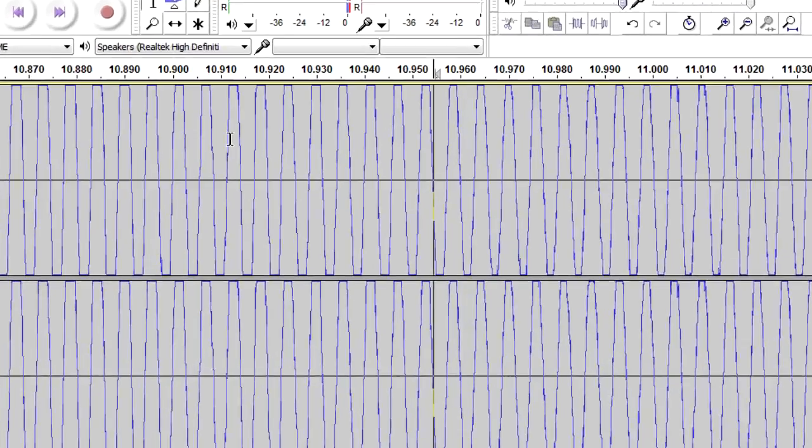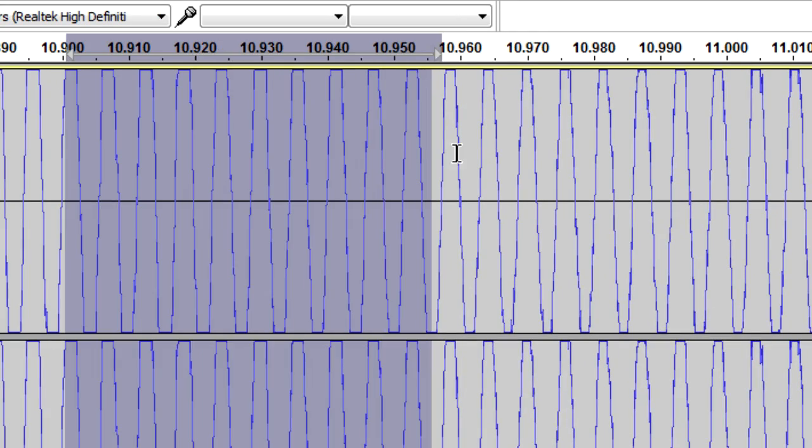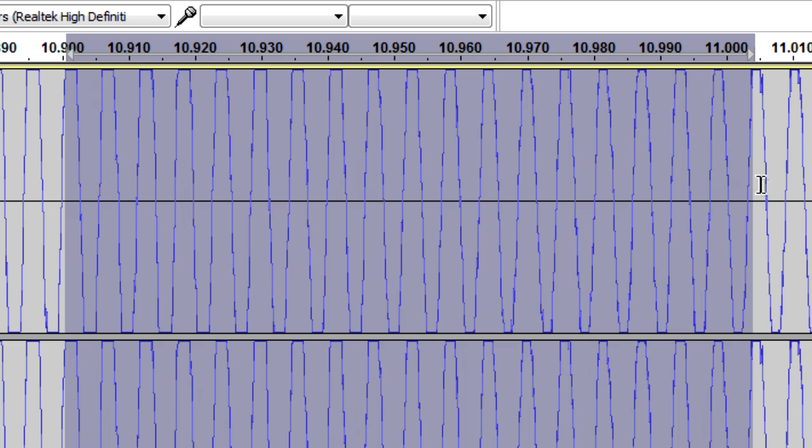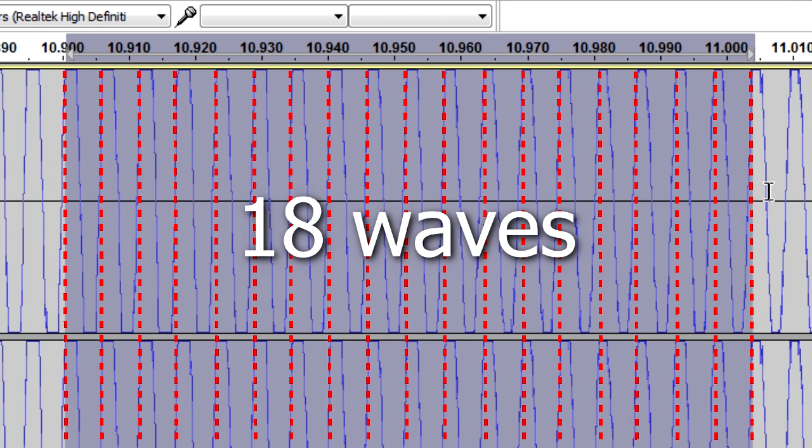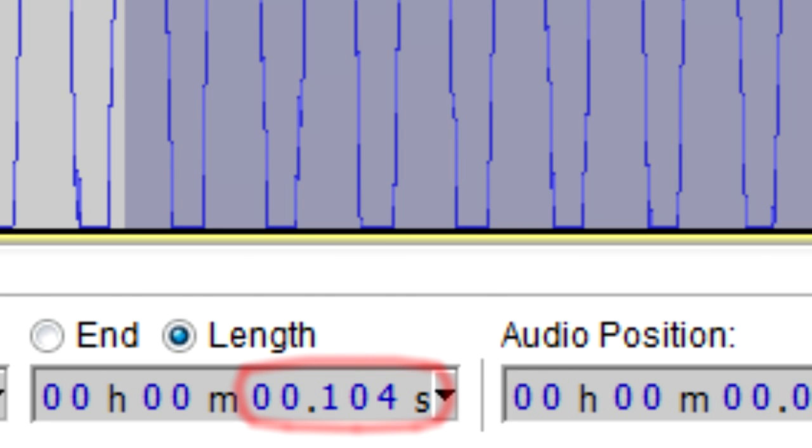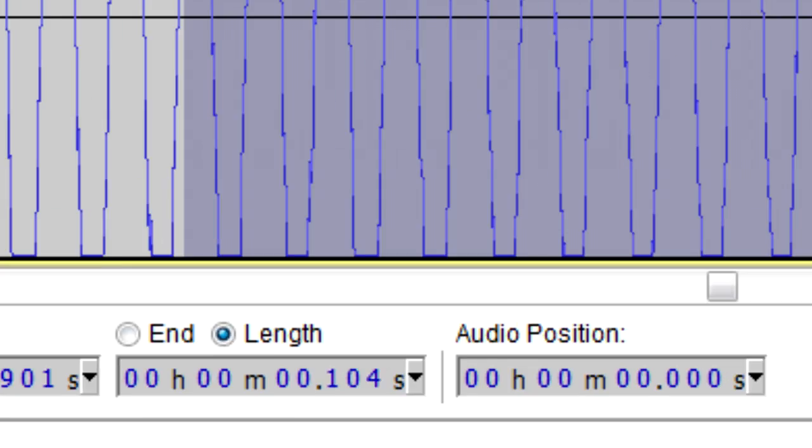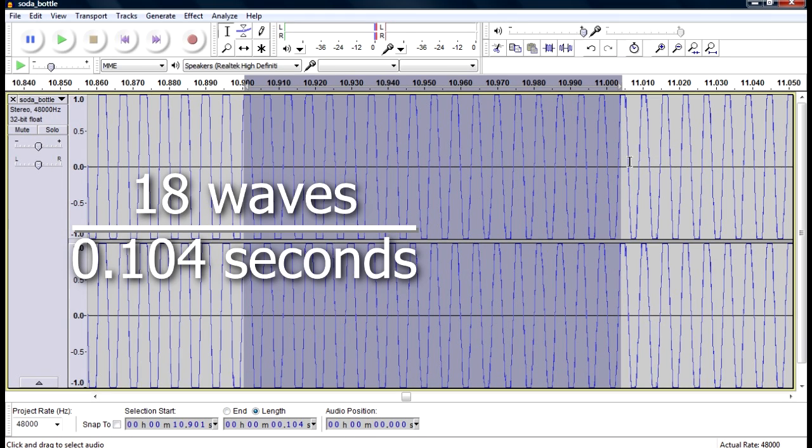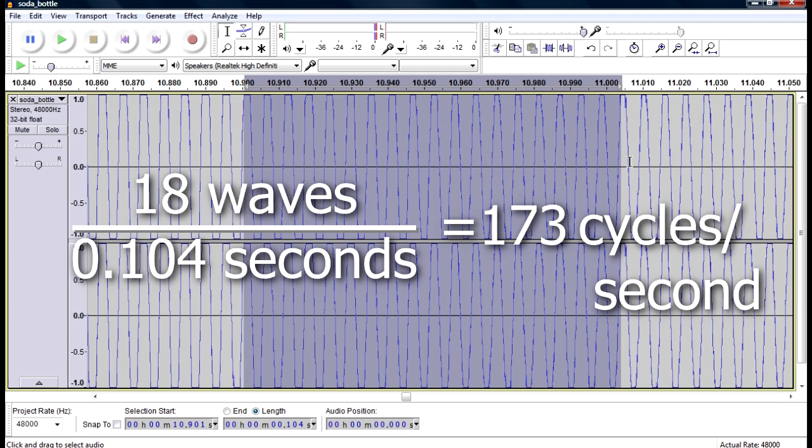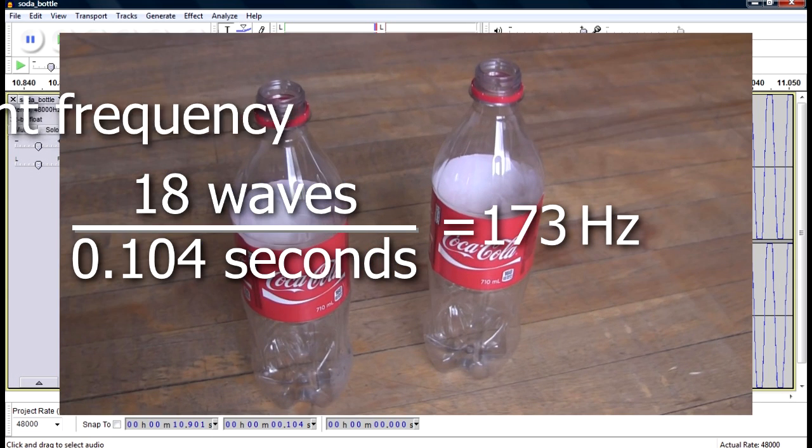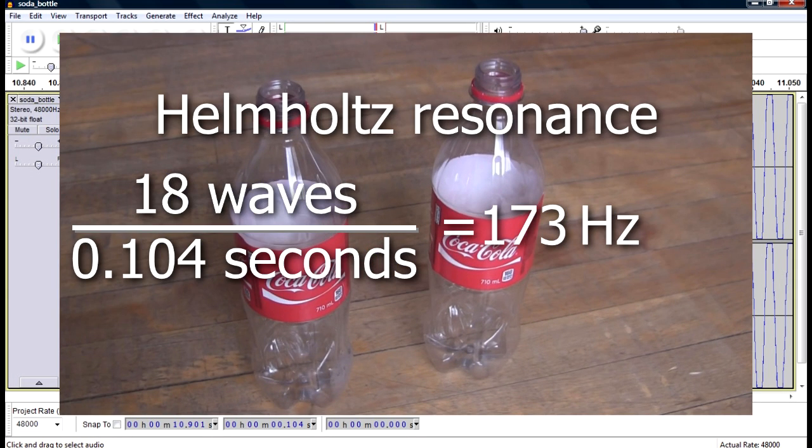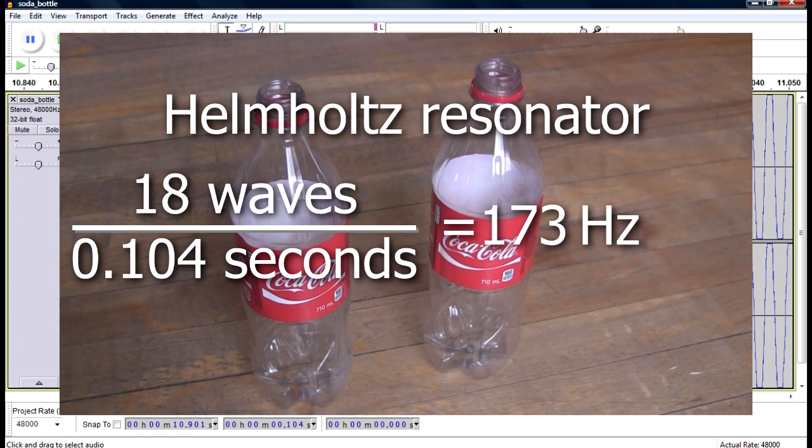I zoom in a little more, and you can see it's all one frequency. I select a bunch of waves from peak to peak. There are 18 waves. The time for my selection is 0.104 seconds. 18 waves divided by 0.104 seconds is a frequency of 173 cycles per second, or 173 hertz, a pretty low frequency. That's the resonant frequency for these bottles. More specifically, it's the Helmholtz resonance, and the bottle is a Helmholtz resonator due to its shape.